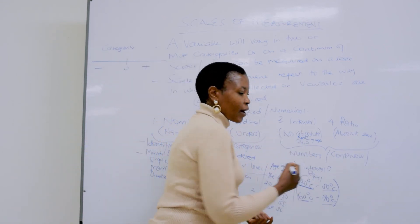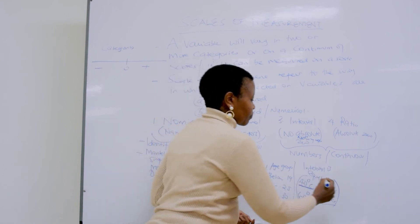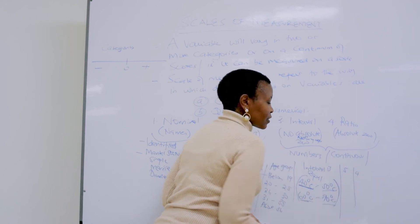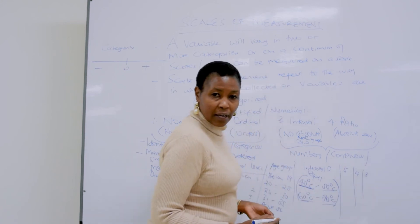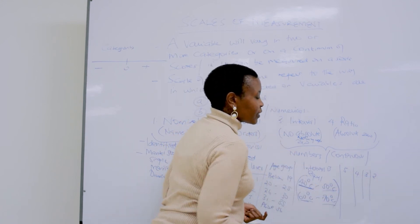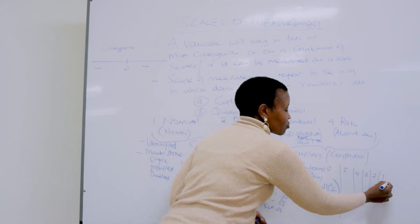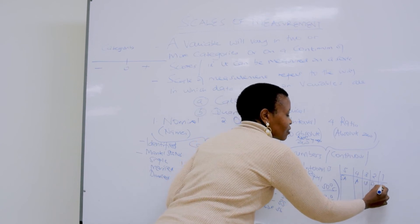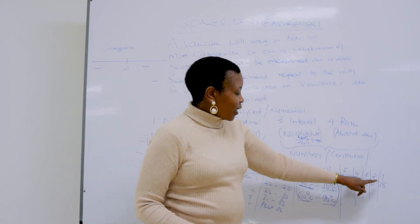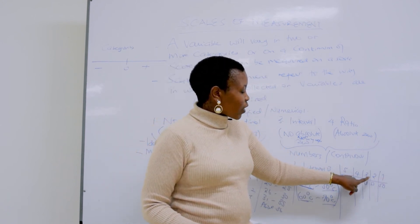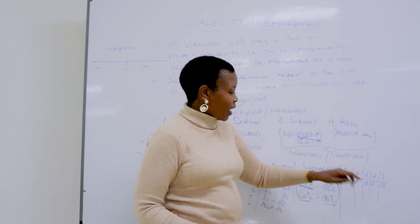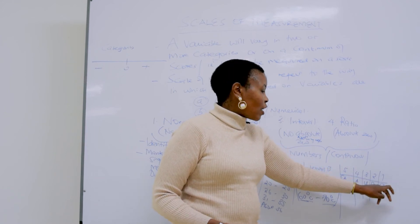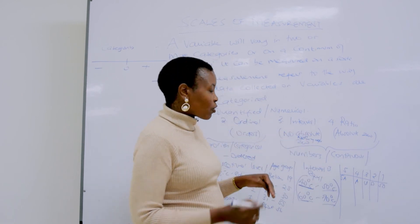Interval measures variables whose intervals between them are equal, but they do not start at absolute zero. If we talk about a Likert scale, which measures attitude — five is strongly agree, four is agree, three is undecided, two is disagree, and one is strongly disagree — the interval between one and two, two and three, three and four, four and five is one, one, one, one. But we do not measure attitude starting from an absolute zero, because nobody has a zero attitude.